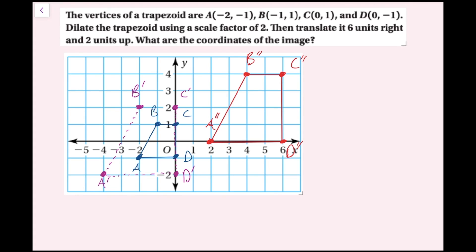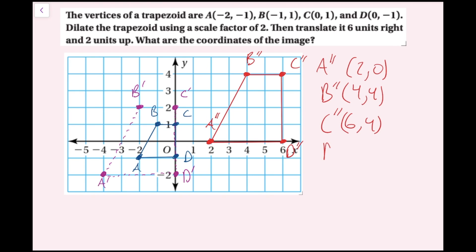I've successfully finished drawing my image. The final coordinates are: a double prime is (2, 0), b double prime is (4, 4), c double prime is (6, 4), and d double prime is (6, 0). I have successfully dilated and then translated this figure.